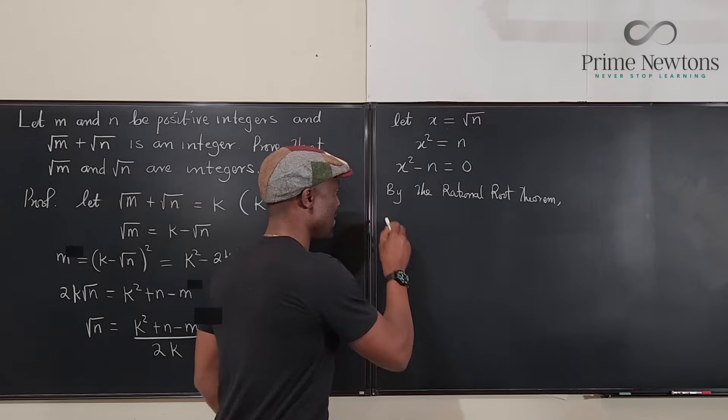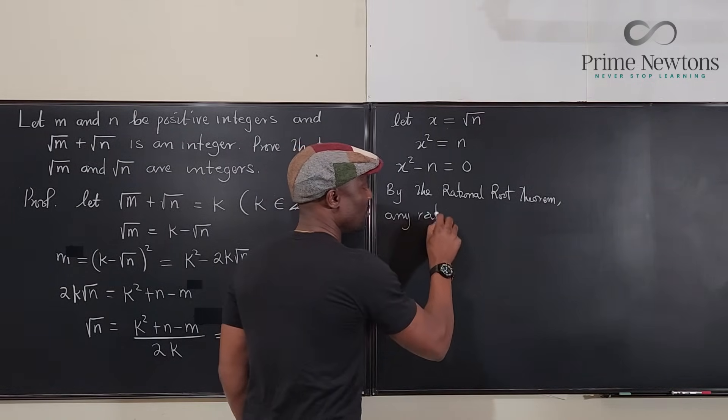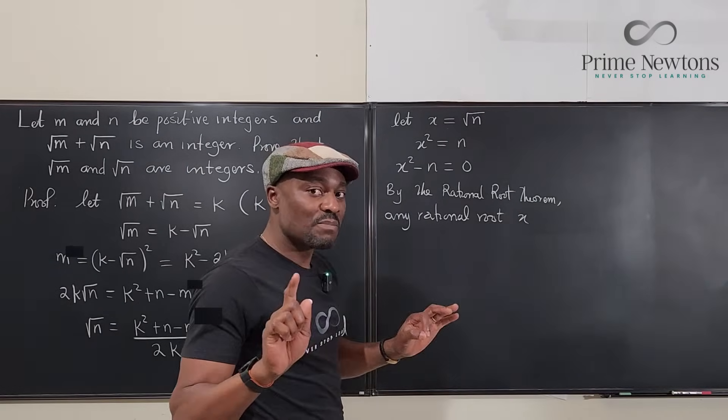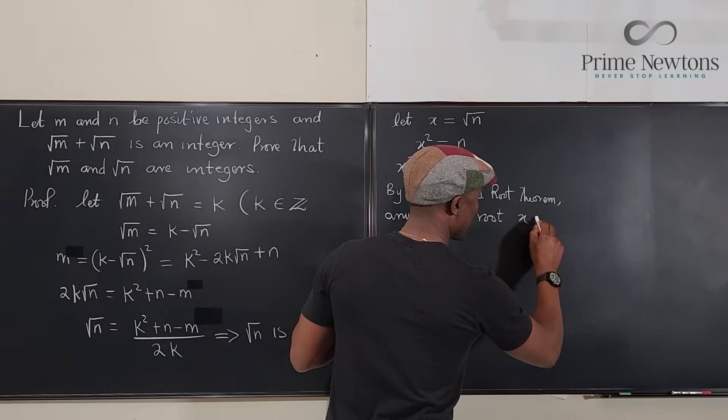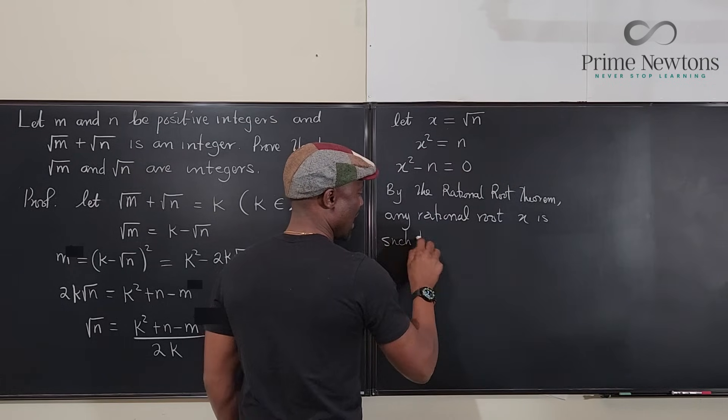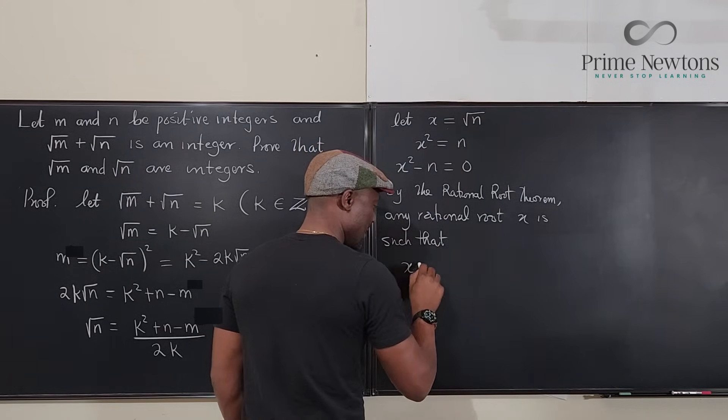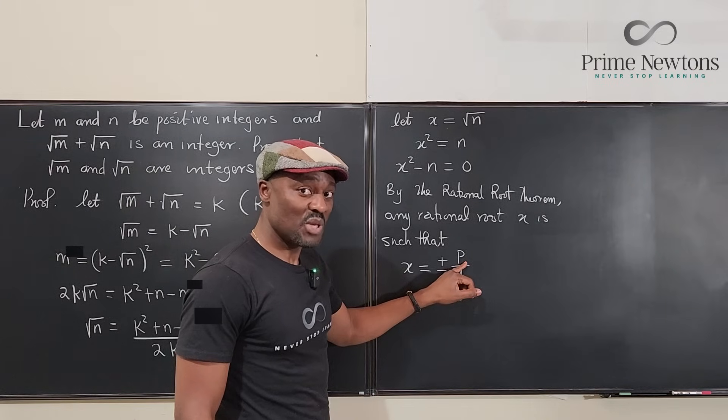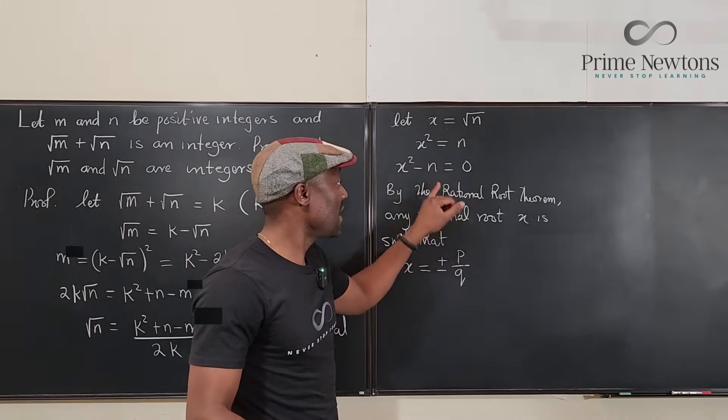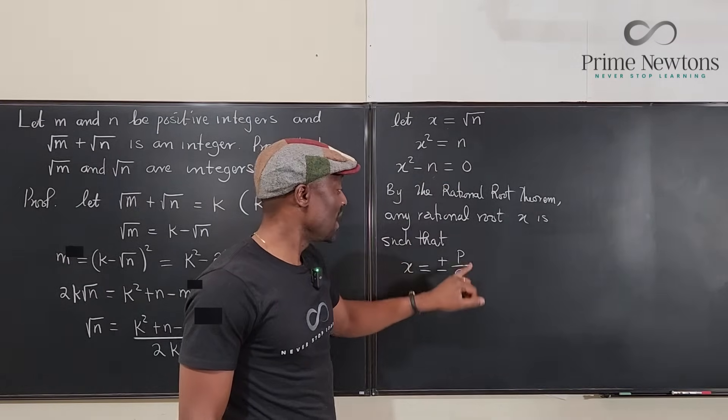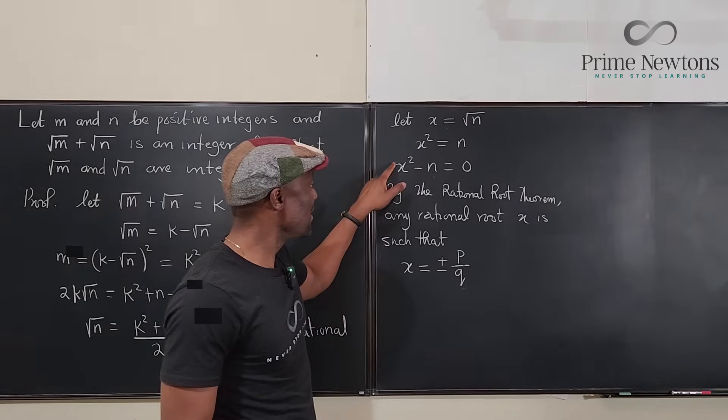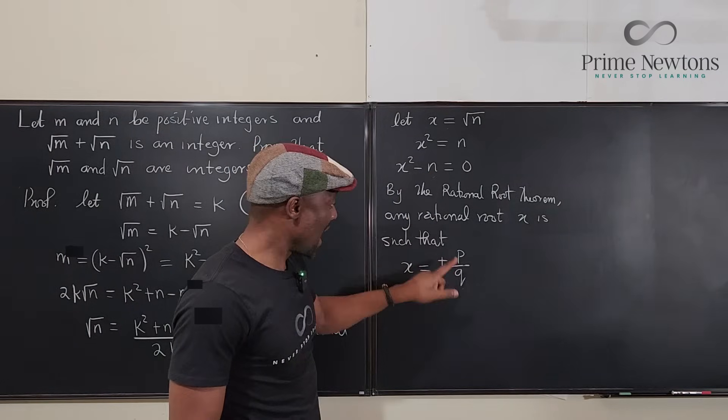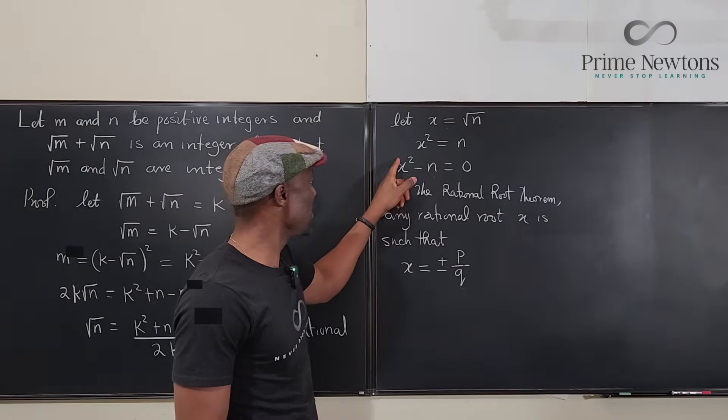By the rational root theorem, any rational root x must be such that x = ±p/q. What is p? p is an integer that divides n. What is q? q is an integer that divides this number here. So in this case, p must divide n and q must divide 1 because the leading coefficient is 1.